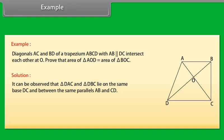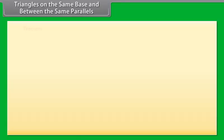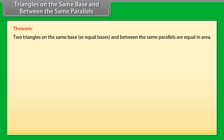Diagonals AC and BD of a trapezium ABCD with AB parallel to DC intersect each other at O. Prove that area of triangle AOD equals area of triangle BOC. Solution: Triangle DAC and triangle DBC lie on the same base DC and between the same parallels AB and CD. Therefore, area of triangle DAC equals area of triangle DBC, which implies area of triangle DAC minus area of triangle DOC equals area of triangle DBC minus area of triangle DOC.